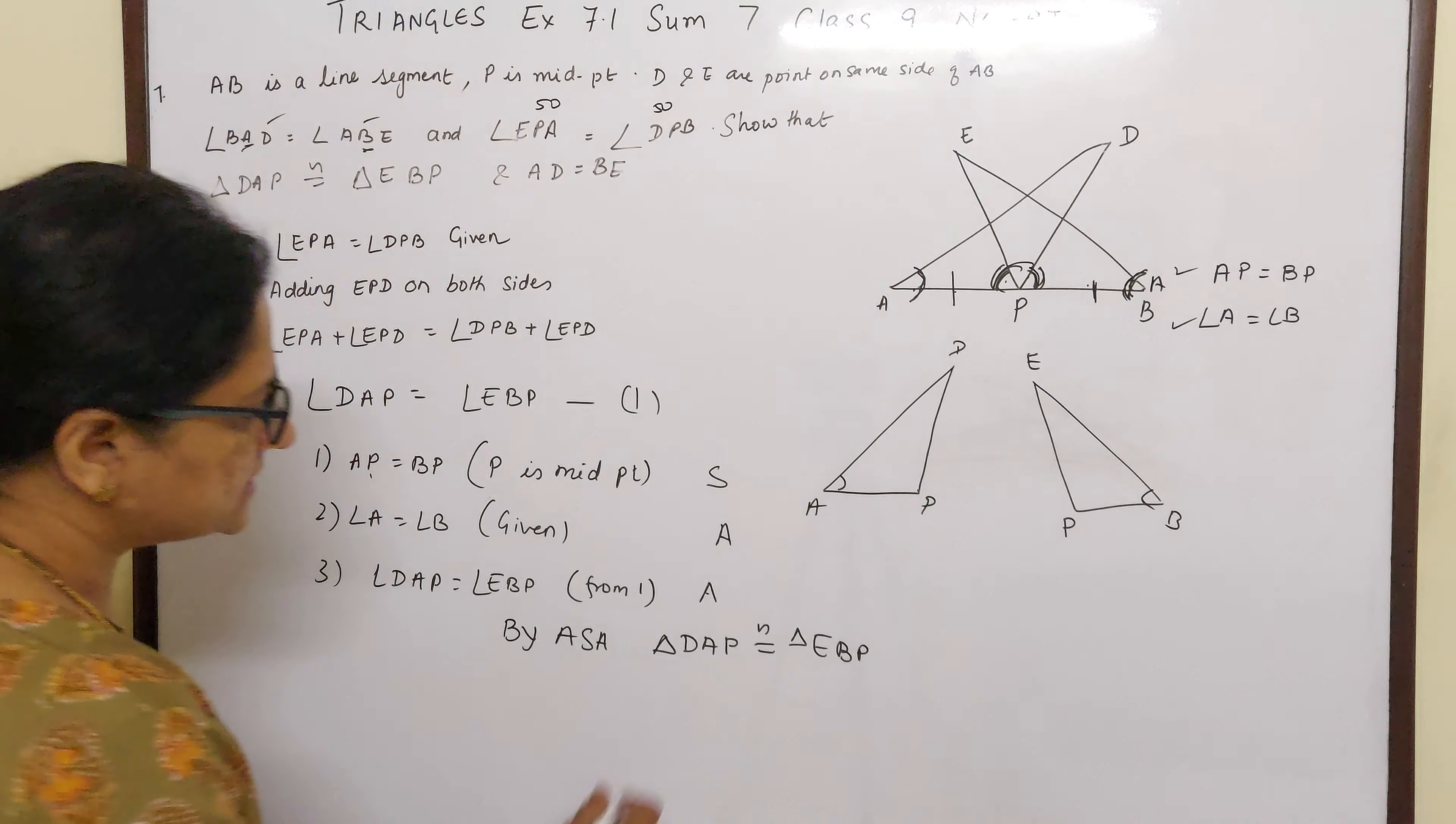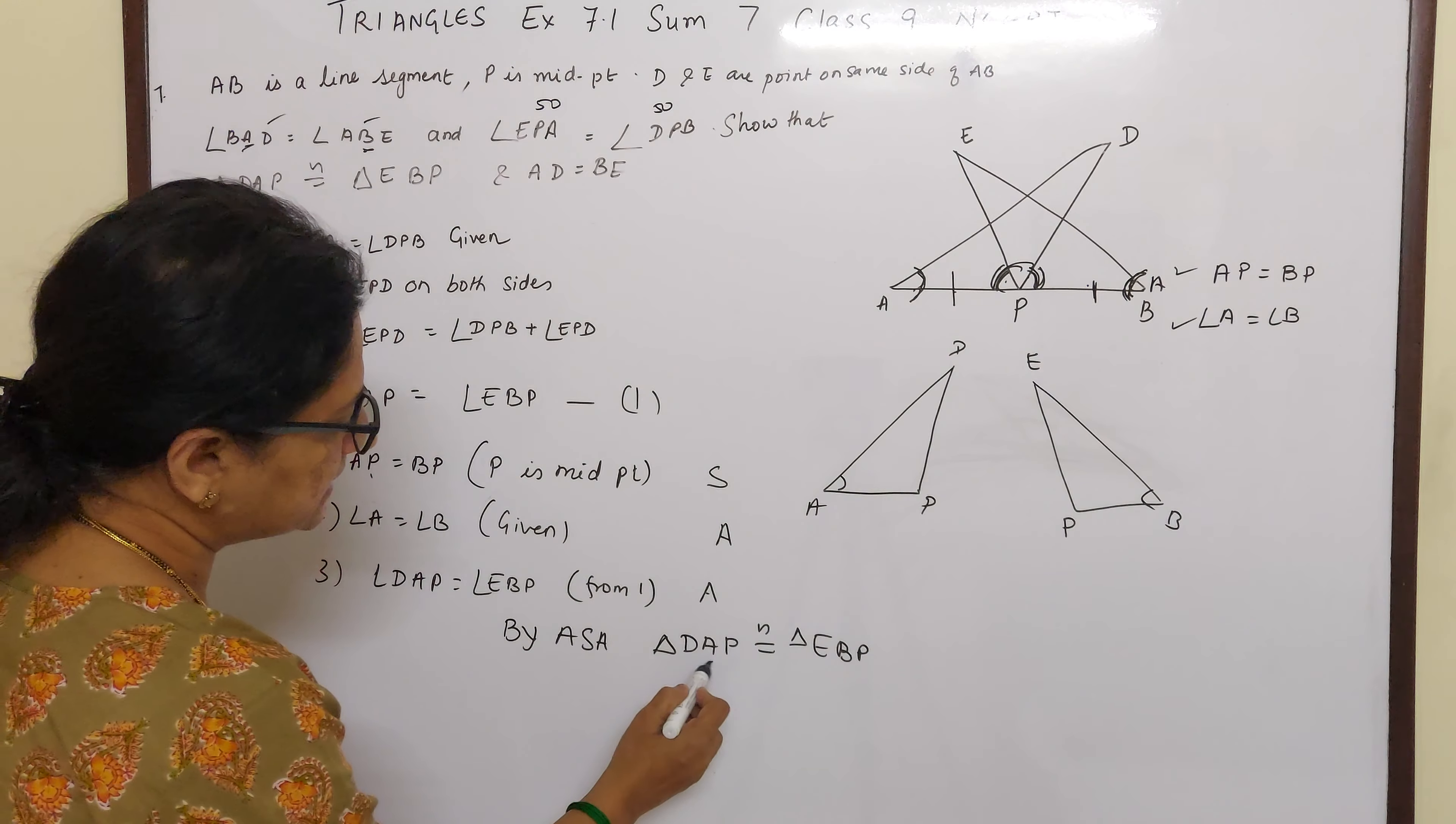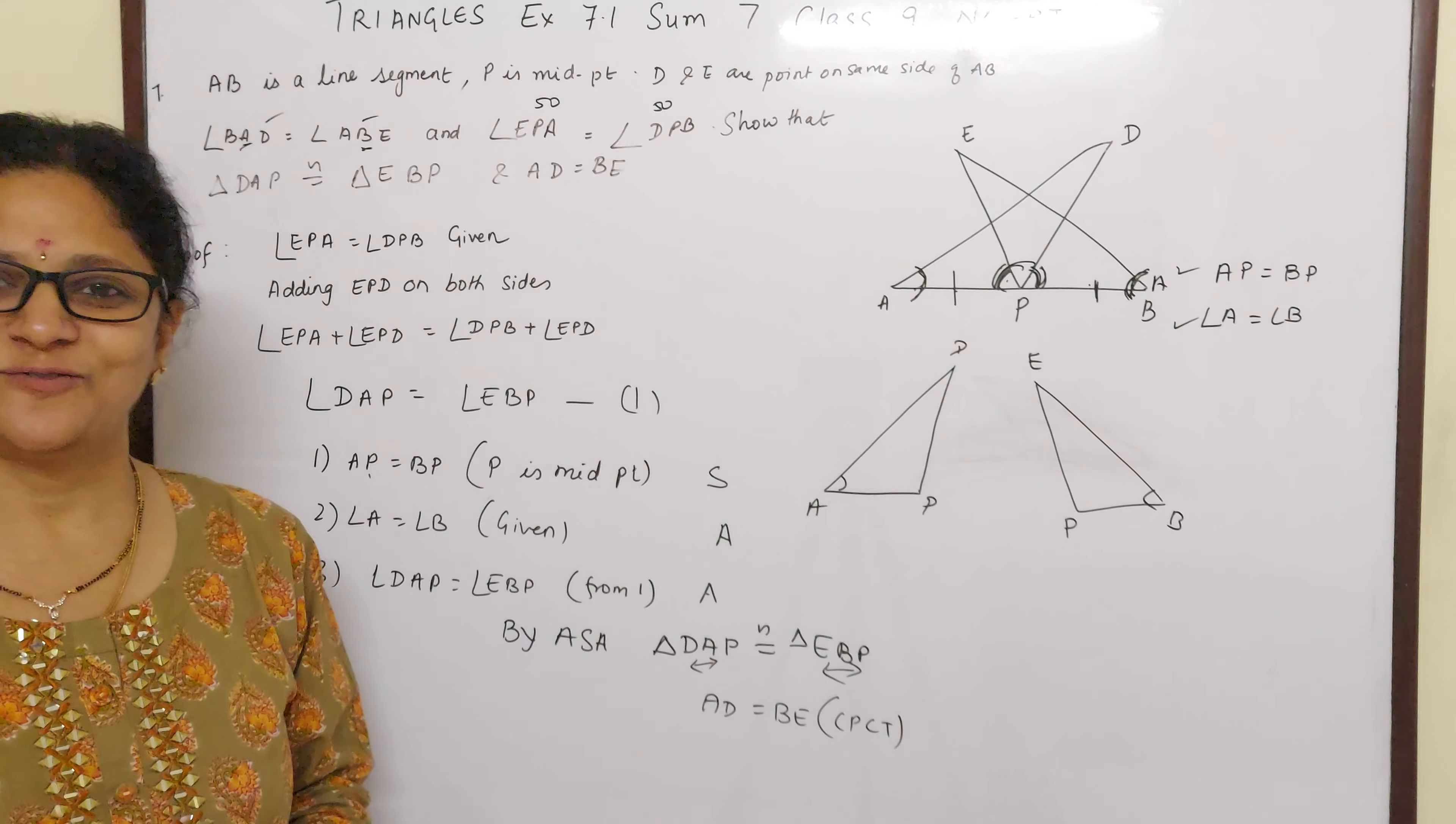And we have to prove AD is equal to BE. See whether they are forming the same pattern. AD is first two, and BE is also first two. So AD is equal to BE, congruent parts of congruent triangles. Hope this sum is easy for you.